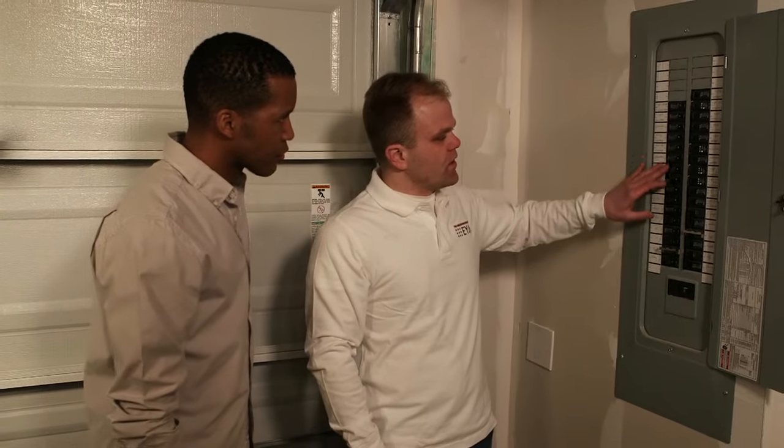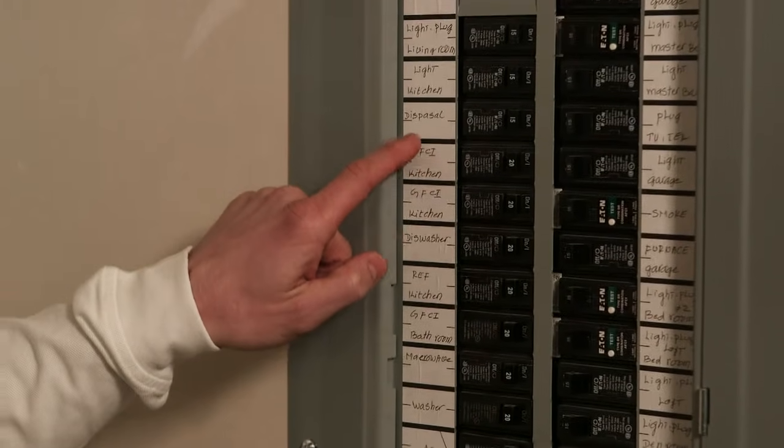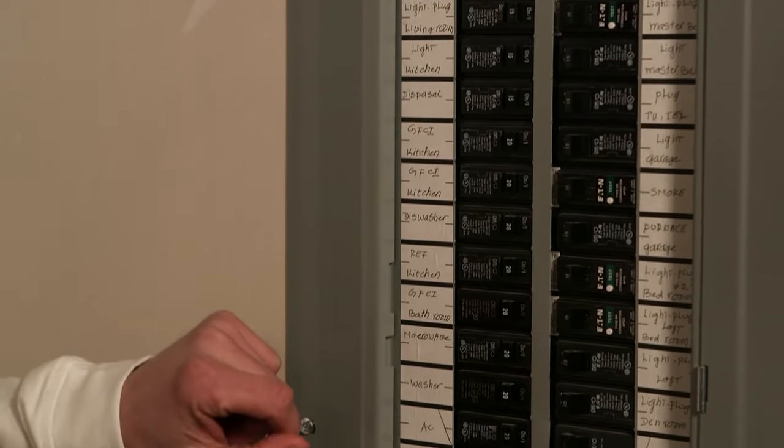All these other ones are for different appliances, different rooms, things like that throughout the house. Everything is labeled on the side here. You can see you've got kitchen, disposal, dishwasher, things like that.